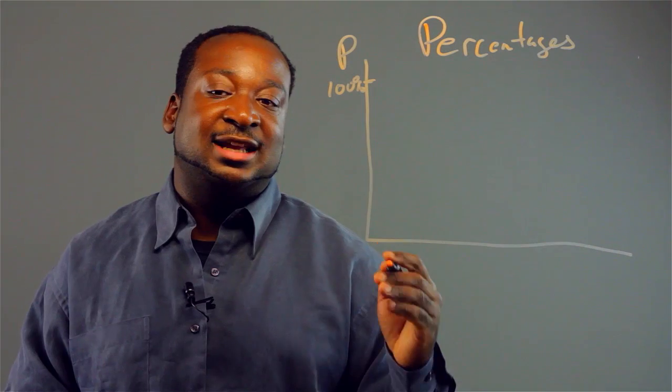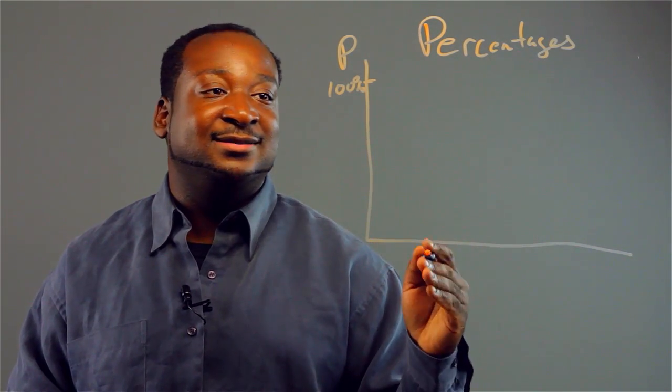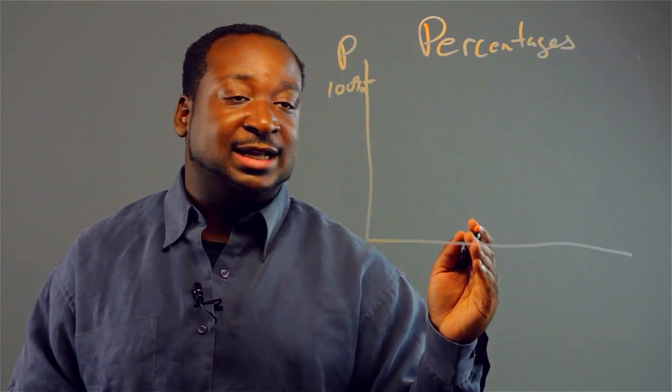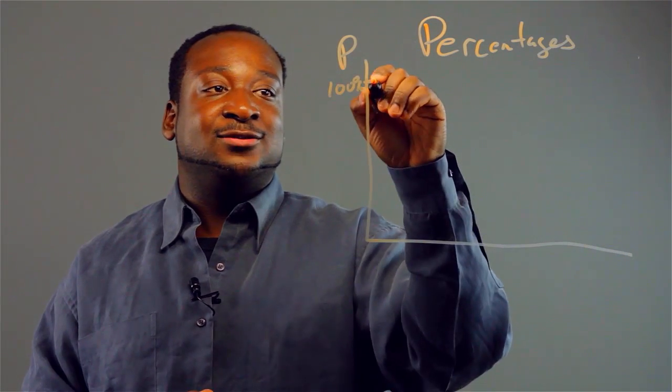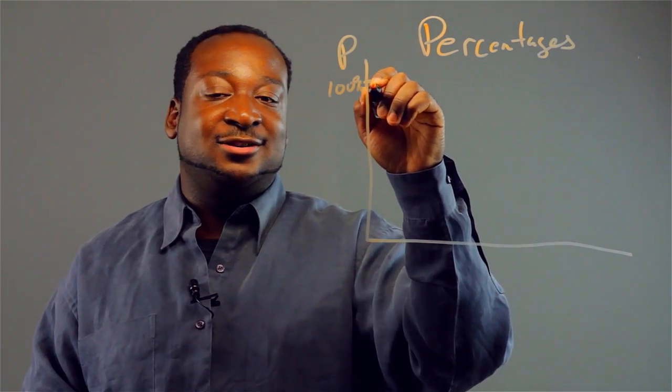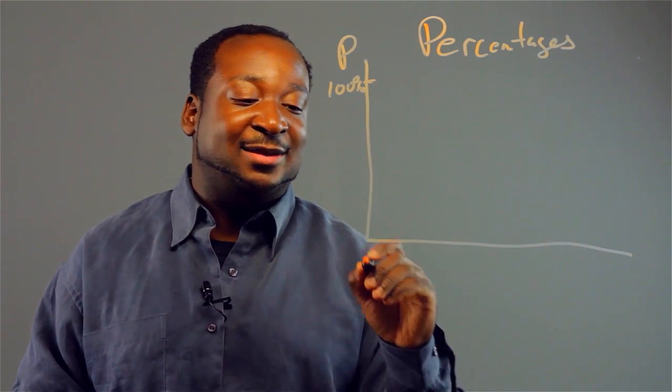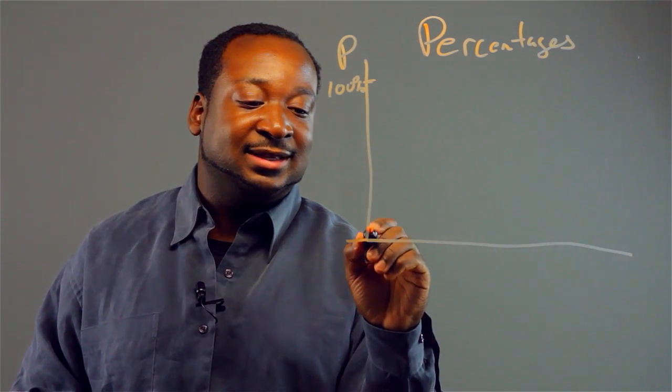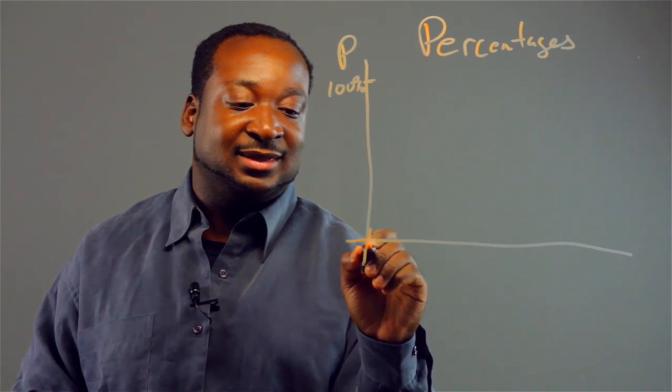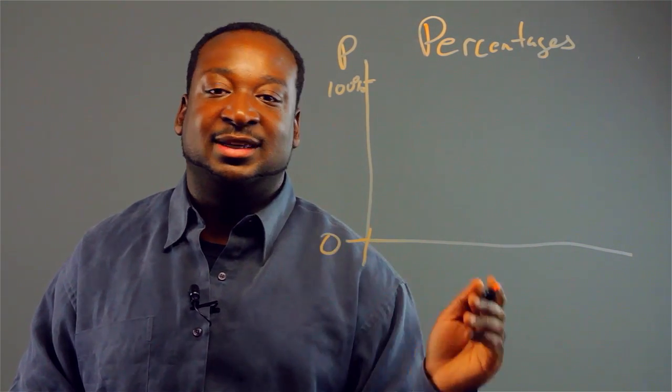And the chance of one of it happening, if it's always going to happen, then of course it will be at 100. And the percentage of an event that will never happen will, of course, be zero. This is our origin. This is zero.